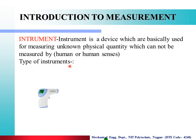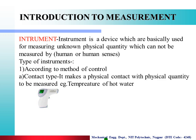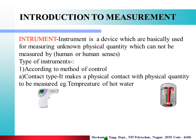Now we see the various types of instruments. The first type is according to the method of control — contact type instrument. A contact type instrument makes a physical contact with the physical quantity to be measured. Example: temperature of hot water measured using a thermometer. The thermometer must remain in contact with the water to measure its temperature. That is why it is called a contact type instrument.